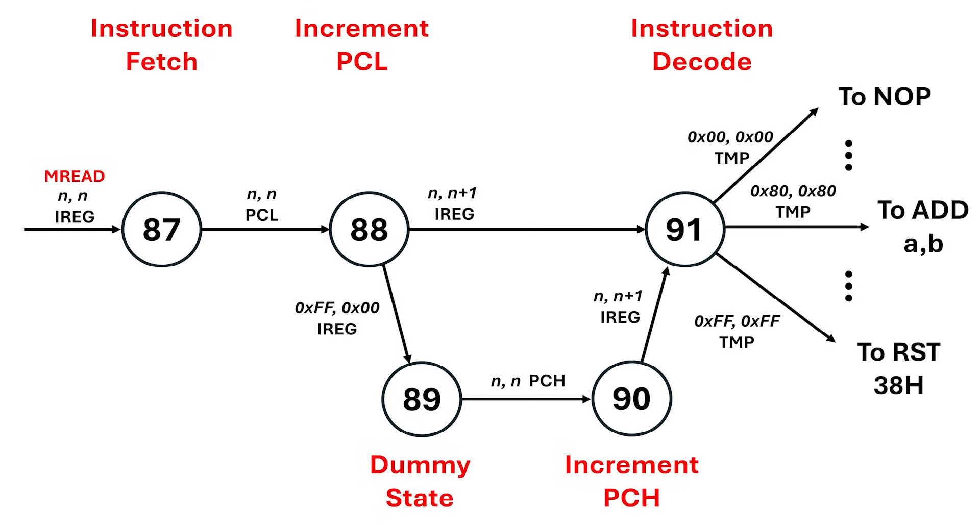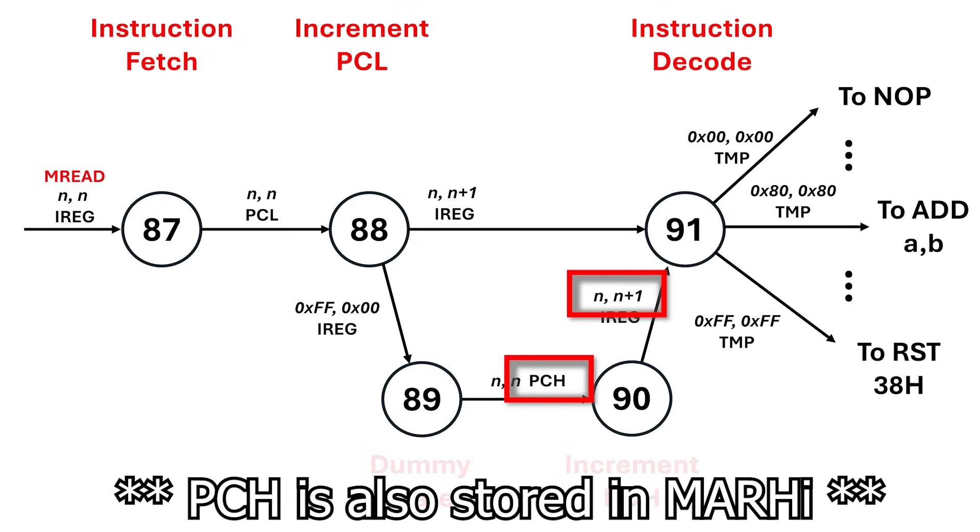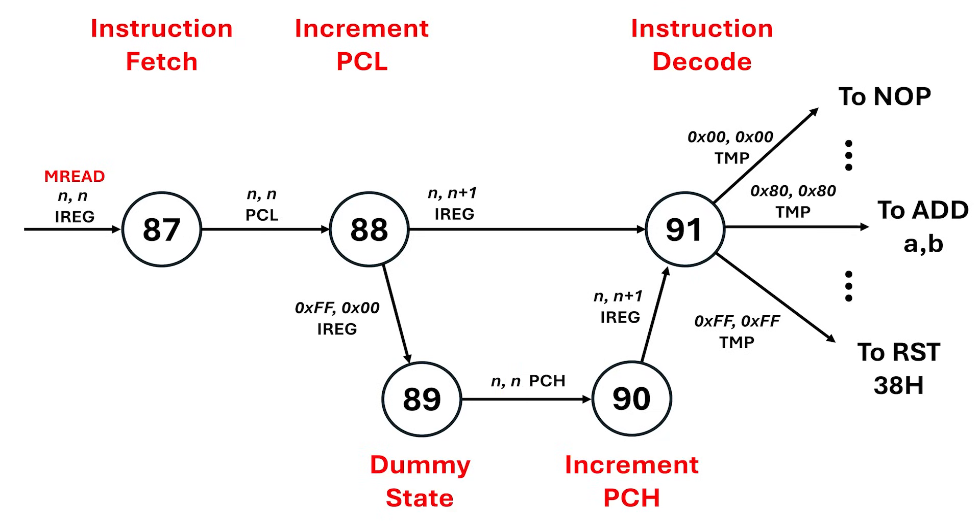So, what's the workaround? I insert a new dummy state, state 89, between state 88 and state 90. Here's how it plays out. All arcs from state 88 reference the instruction register, even the one leading to state 89. In state 89, we just read and write the instruction register without changing it, essentially no op. Then, we proceed to state 90, where we increment PCH, and from there we move to state 91, again using the instruction register. Now, all arcs from a state use the same notepad register, and we only pay one extra clock cycle, once every 256 instructions. That's a cost I'll happily take.